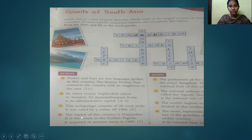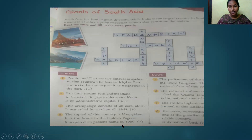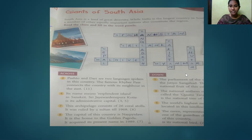Eighth question: The capital of this country is Naypyidaw. It is the home to the Golden Pagoda. It acquired its present name in 1989. The answer is Myanmar.